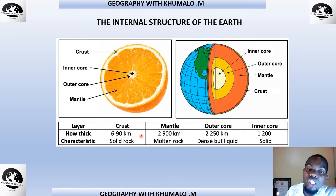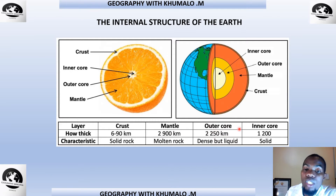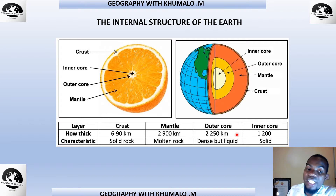Know the characteristics of each layer: the crust is 6 to 90 kilometres thick and is solid rock. The mantle is 2,200 kilometres thick and contains molten rock, which is liquid. The outer core is 2,250 kilometres and is dense but liquid. The inner core is 1,200 kilometres thick and is solid.